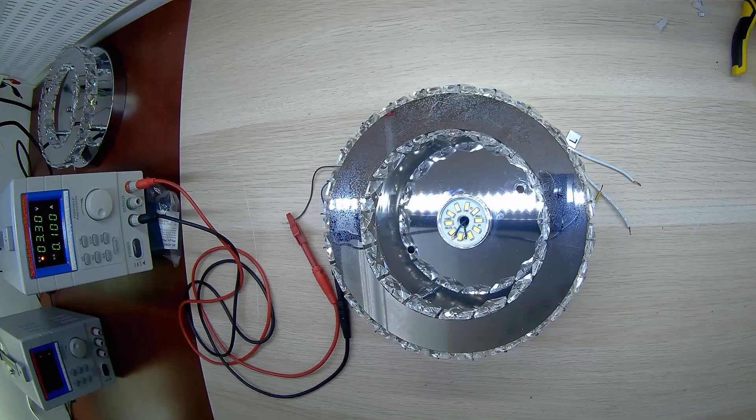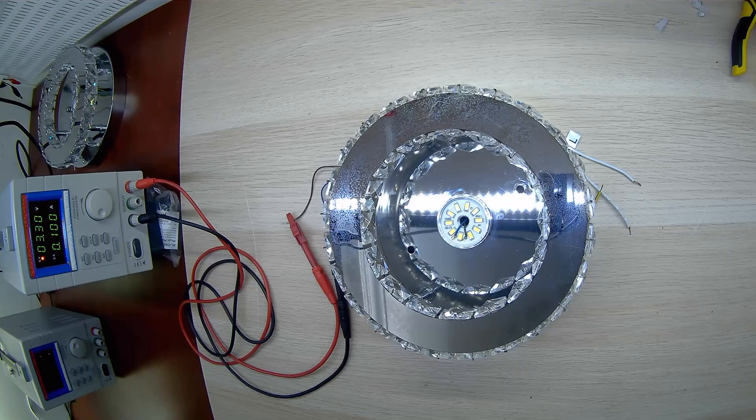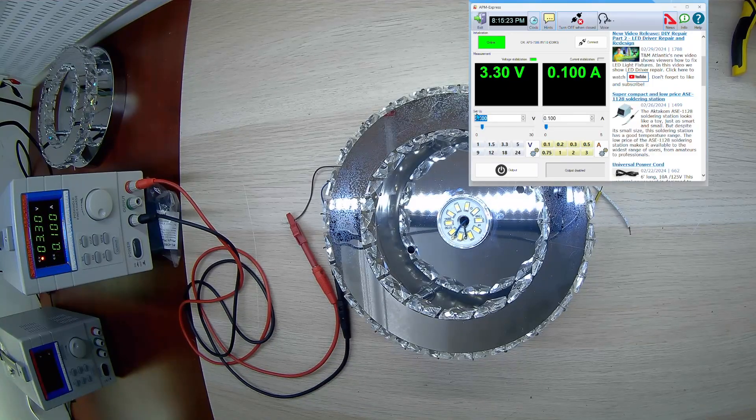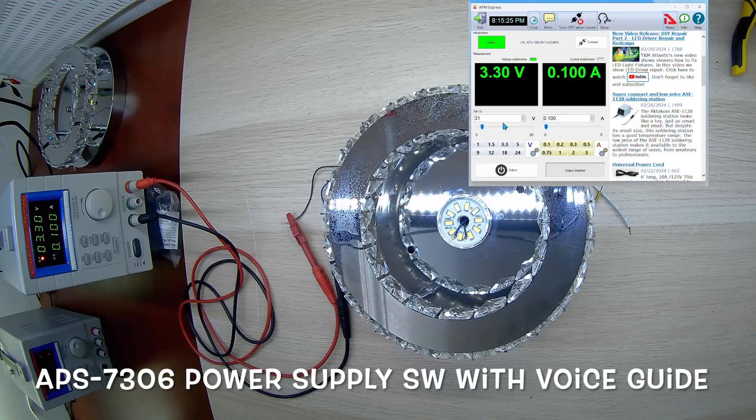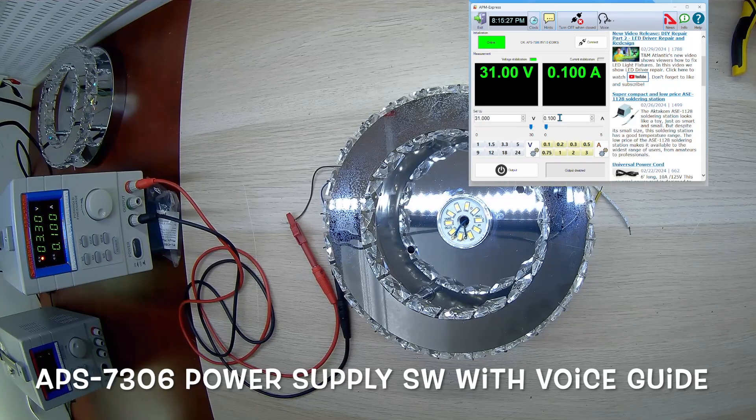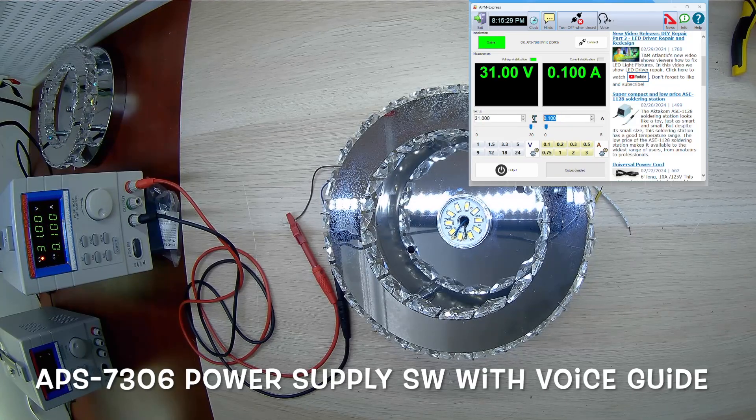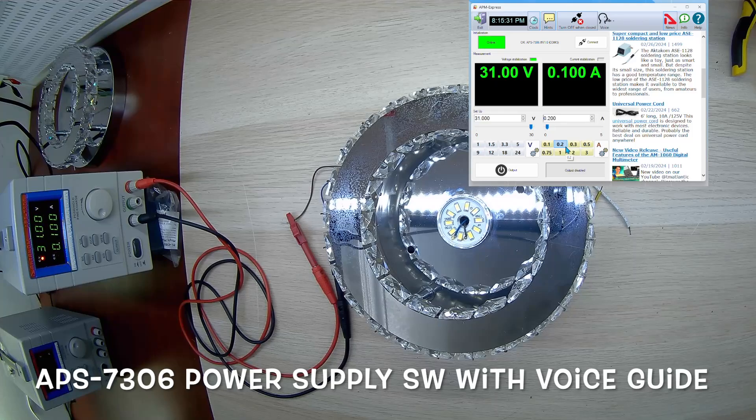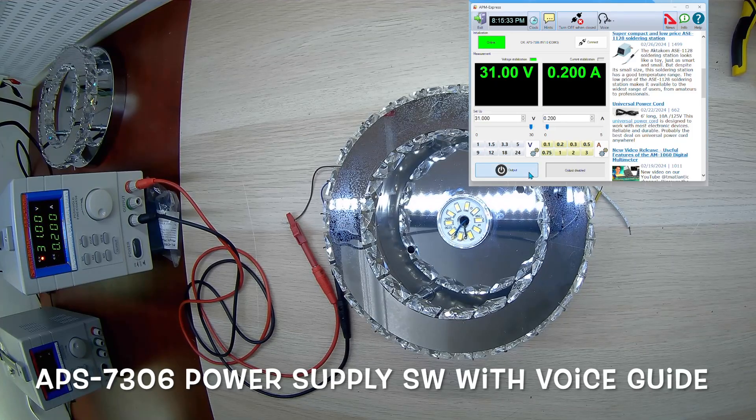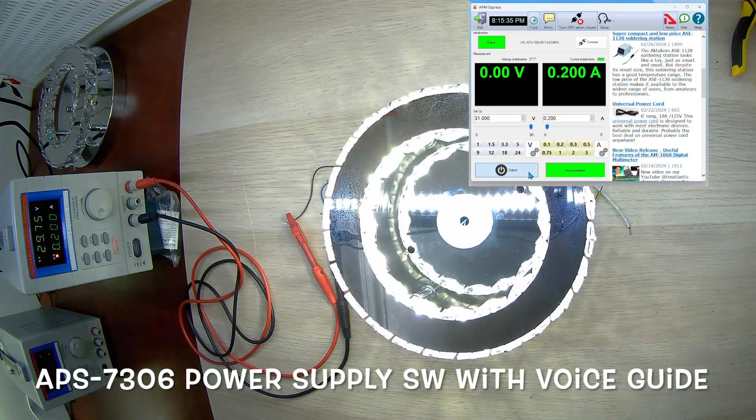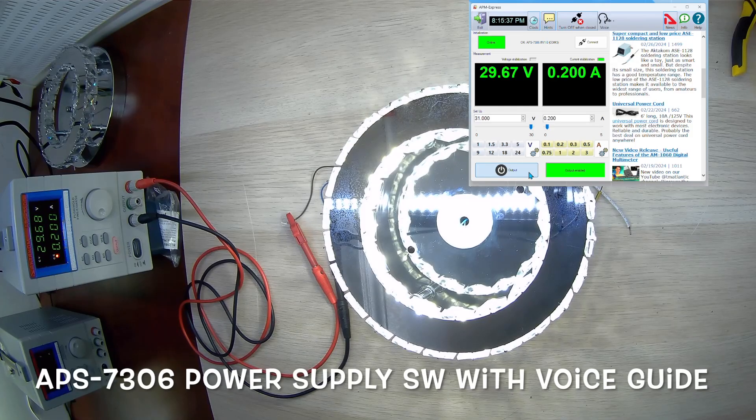Knowing the parameters for powering a large LED section, we will connect our Octacom APS7306 power supply and check the operation of the large LED section. We supply 31 volts and we see the large LED section lights up perfectly. Thus, a large section of the LED section is perfectly fine.